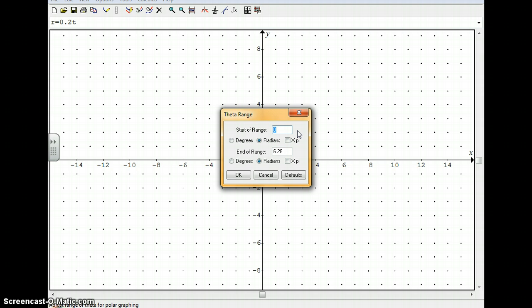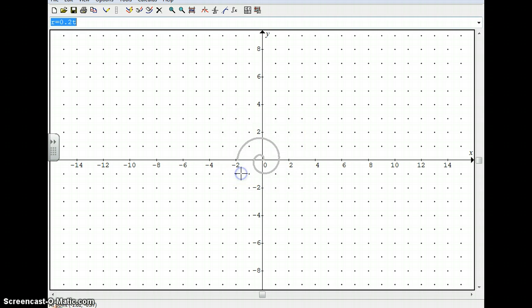It's a little unfortunate that they use the word range, and this really is the domain of the function. So let's say instead of going from 0 to 6.28, which is about 2 pi, let's say we change it to 3 pi. There's an easy way to do that. Just click 3 and then click the little box there that says times pi. Hit OK. And there you go. We just added another part to the spiral.